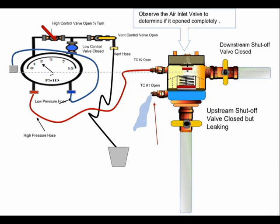To test the air inlet valve opening point with a leaking upstream shutoff valve, follow the procedures for measuring the opening point of the air inlet valve as previously stated. But before opening the test kit high control valve one quarter turn, slightly open test cock number one.